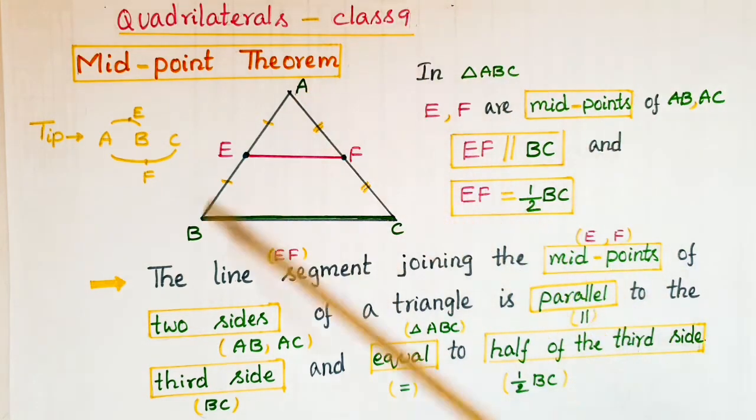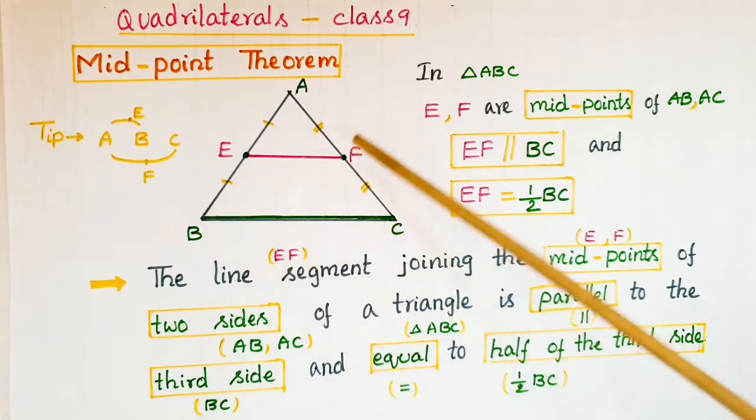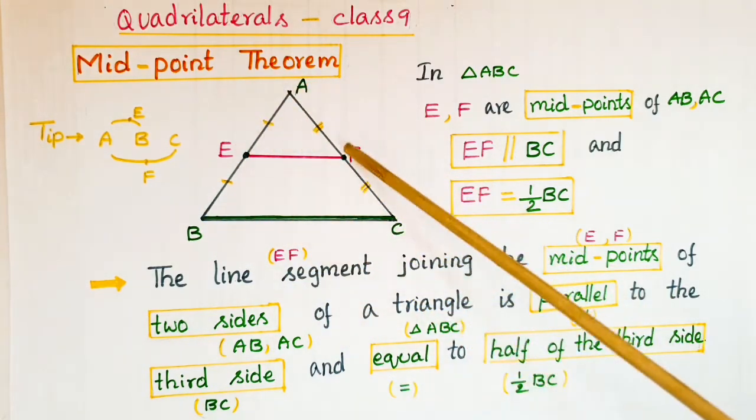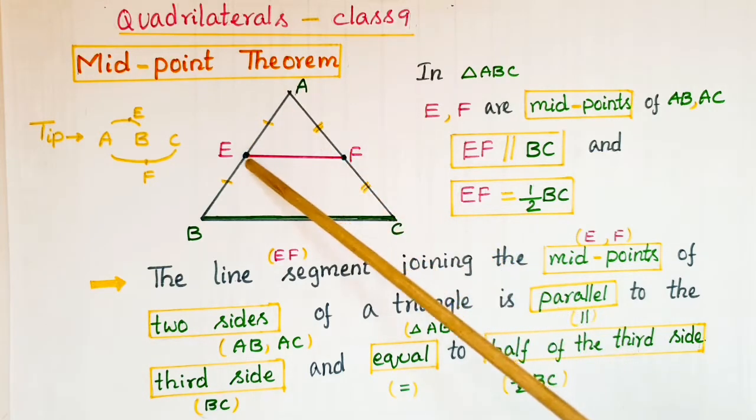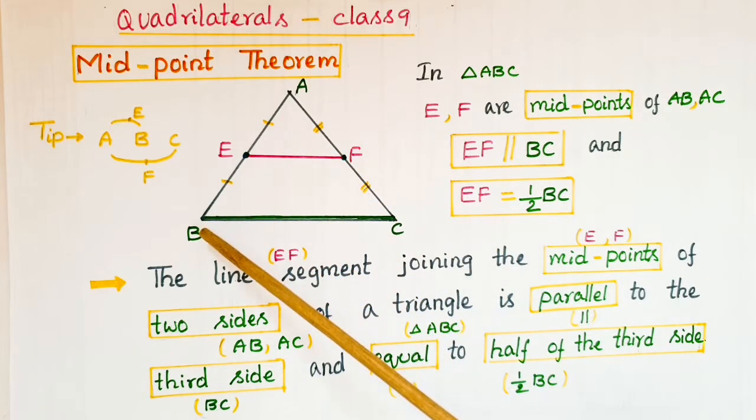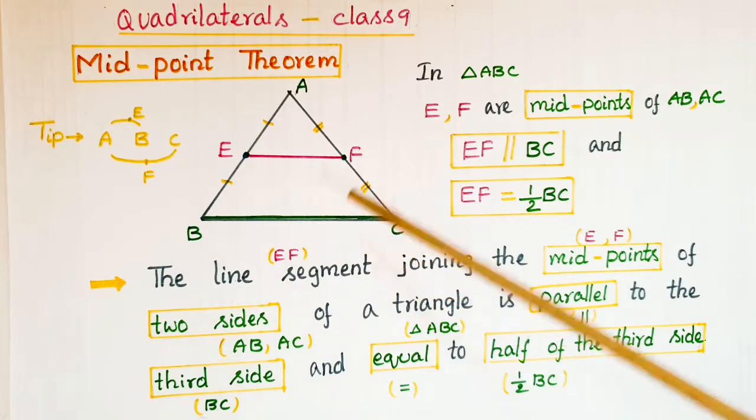If you take a triangle ABC, where E is the midpoint of AB and F is the midpoint of AC, and if you join these two midpoints E and F, you will get a line segment EF. Here, EF is parallel to the third side of the triangle, BC. So EF is parallel to BC and EF is equal to half of BC.